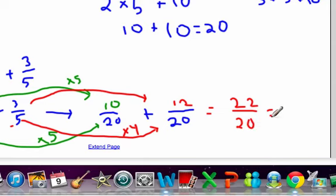If you simplify that, that's equal to eleven-tenths. And we want to make this a mixed number, right? So it would be one and one-tenth miles that Courtney ran in all.